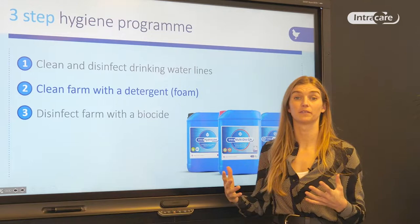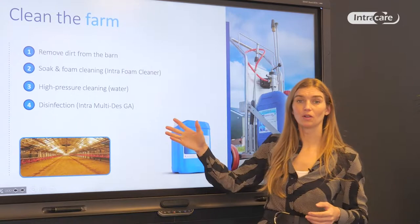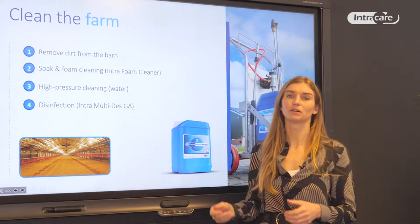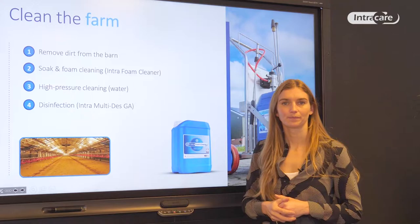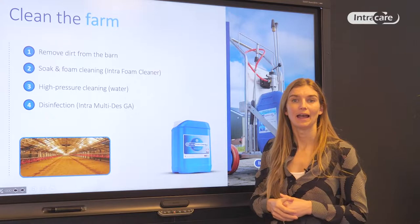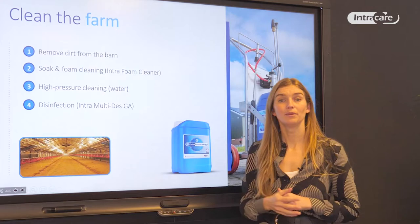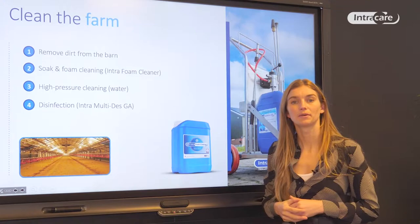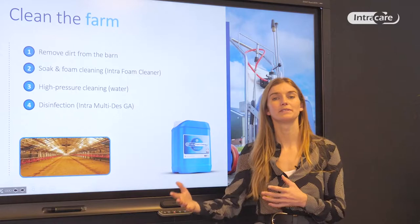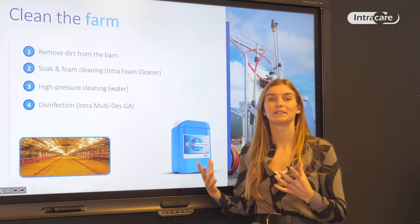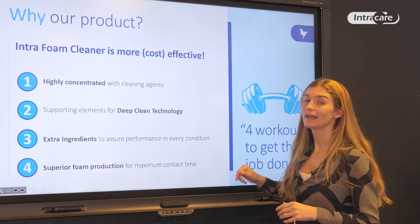Next is how to clean the farm with a detergent — a foam cleaner. The general protocol starts with manually removing dirt from the barn, then soaking and Intrafoam cleaning, followed by high-pressure washing with water, and then the farm is ready for the final step: disinfection with IntraMulti-GA. It is really important not to skip the Intrafoam cleaner step, because you don't want your disinfectant reacting with organic pollution. Your disinfectant should have one function — disinfection of pathogens — while the foam cleaner removes all contamination and hiding spots.